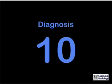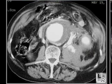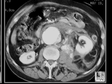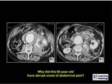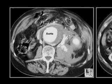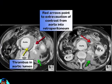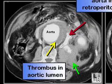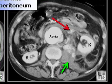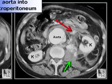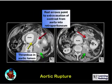This is Diagnosis 10. Why did this 85-year-old have an abrupt onset of abdominal pain? Two contrast-enhanced CT images of the abdomen show thrombus demonstrated by the yellow arrow separating the contrast in the aorta from the aortic wall. More critically, the red arrows point to contrast that has actively extravasated from the aorta into the retroperitoneum. The green arrows point to less acute blood. This is an example of rupture of the abdominal aorta, and this patient did not do well subsequently.